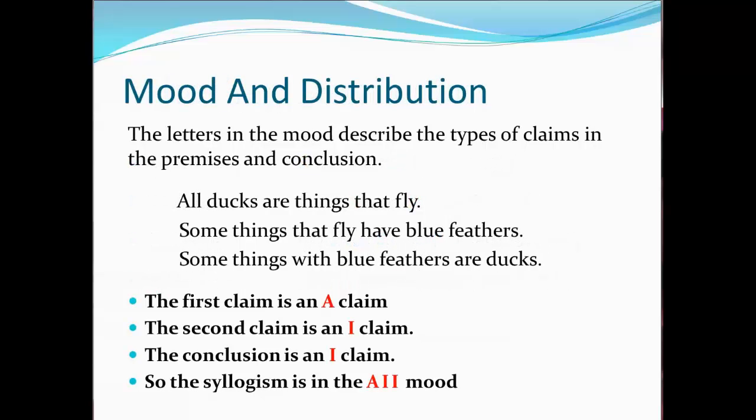Remember that the mood of a syllogism is just the three letters of the types of claims that make up the argument. In this example, the major premise is 'All ducks are things that fly,' which is an A claim. The minor premise is 'Some things that fly have blue feathers,' which is an I claim. And the conclusion is 'Some things with blue feathers are ducks,' which is also an I claim. So the mood of this syllogism is A, I, I.